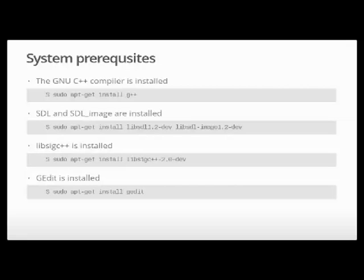System prerequisites. You need a C++ compiler, preferably the GNU C++ compiler. You need SDL and SDL image development libraries on the Debian version that ships on the Raspberry Pi — that's the command line magic you need to install things. We also need Libsig C++, which is a great library that provides us with a very C++ way of sending signals around the system. I like to use GEdit as my text editor, but in this video I won't be going into any demos; we're just going to look at code from a high enough level.